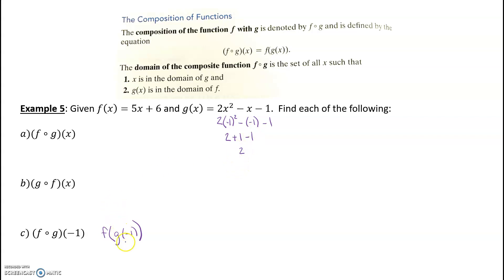So G of negative 1 is 2. So really we want F of 2, right? G of negative 1, we went to G plugged in negative 1, and we got 2. G of negative 1 is 2. So we really want F of 2.